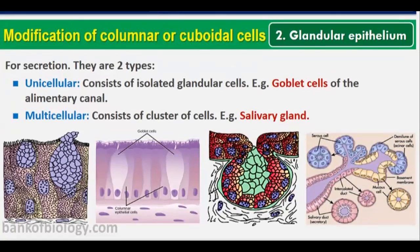In simple epithelium we studied three categories: squamous, cuboidal, and columnar epithelium, plus ciliated columnar epithelium. Now we deal with glandular epithelium. Glandular epithelium is a modification of columnar and cuboidal epithelium. It can be unicellular — forming a single-cell gland such as goblet cells of the alimentary canal, which secrete mucus.